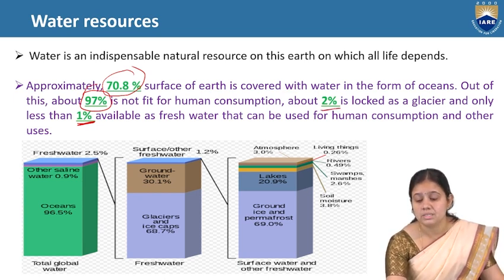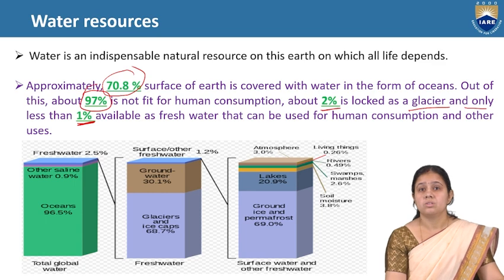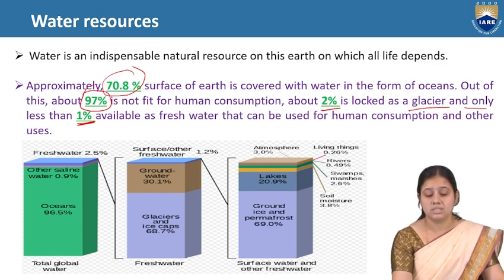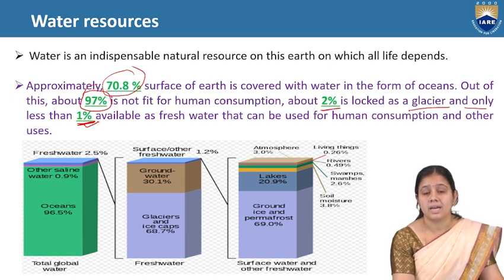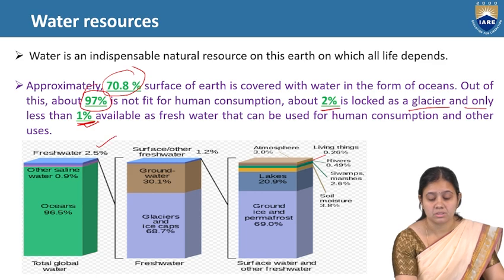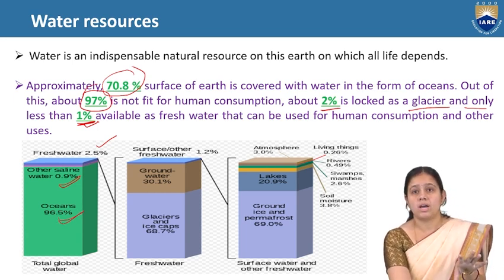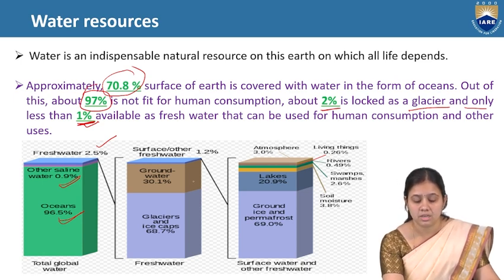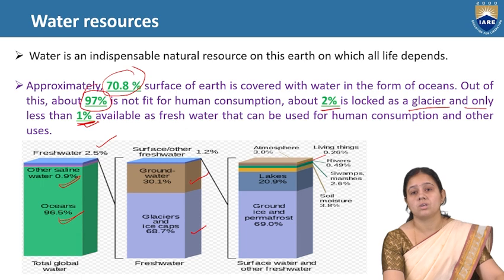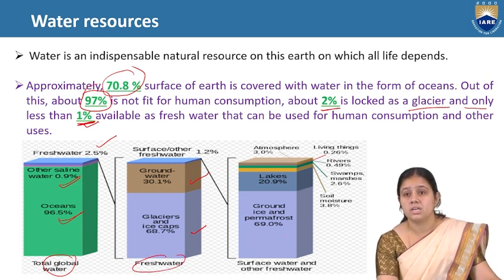Only 2% is locked in glaciers present in the North Pole and South Pole. In this division, only 1% is available as fresh water for our daily use. Fresh water is 2.5% of total water, about which 0.9% is saline and 96.5% is total global water. Of surface water, 30% is surface water and 68% is glacier water that is fresh water.